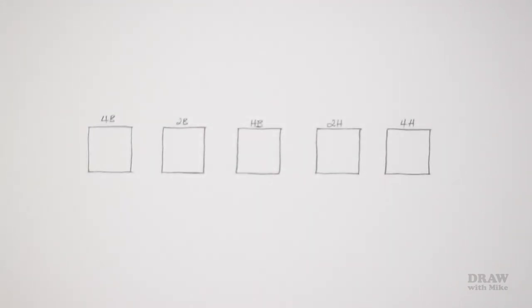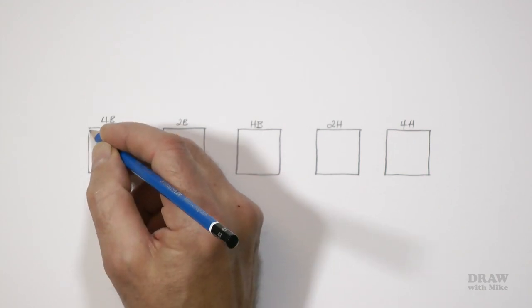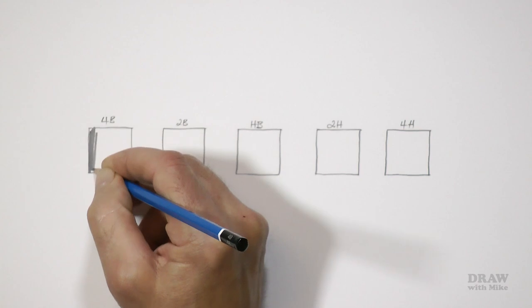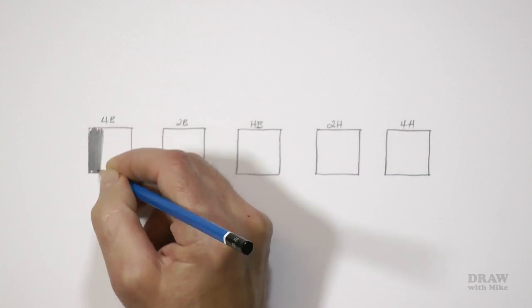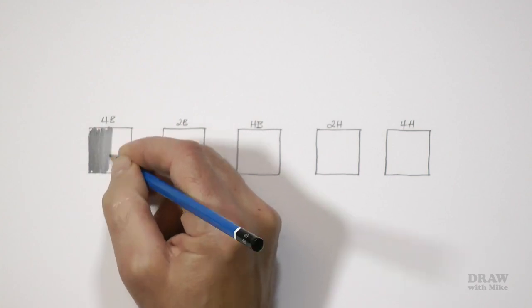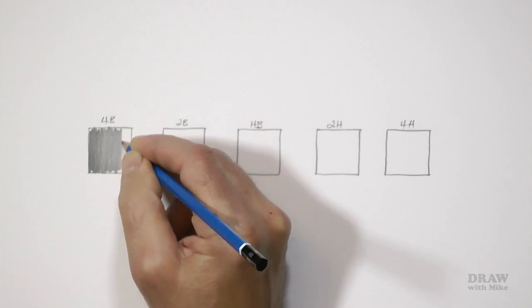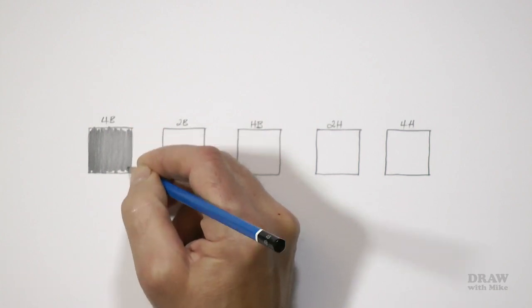Draw five boxes, about an inch square, two and a half centimeters, and then label them 4B to 4H. First fill the 4B box and make it black. No need to be tidy, just fill it in. Why not 6B or 8B? Well you try them. You might like them. Personally I find them too grainy.